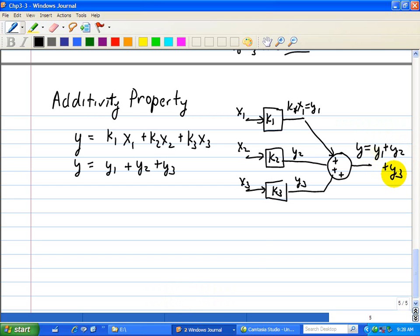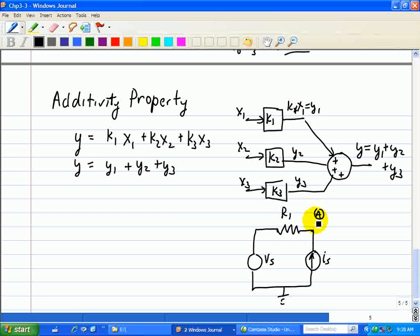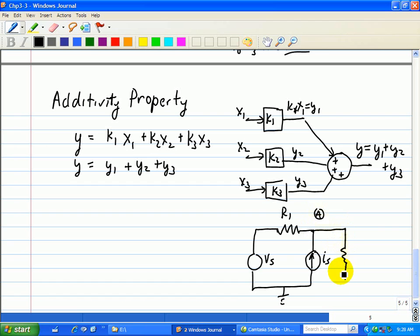Now let's look at a circuit. Here we have two sources of input, one due to a current source, one due to a voltage source, and we have a resistor R1 at node A. Here's our ground point, and we have another resistor R2.